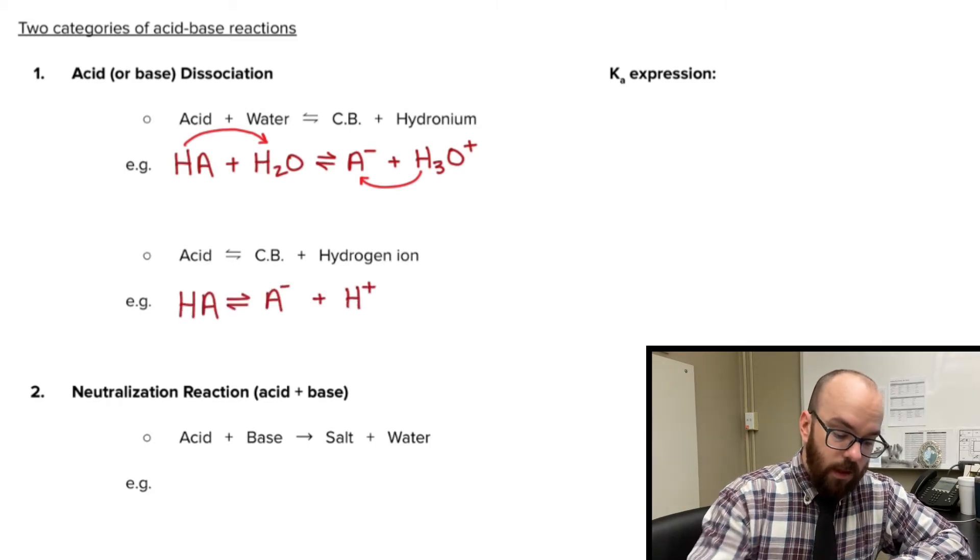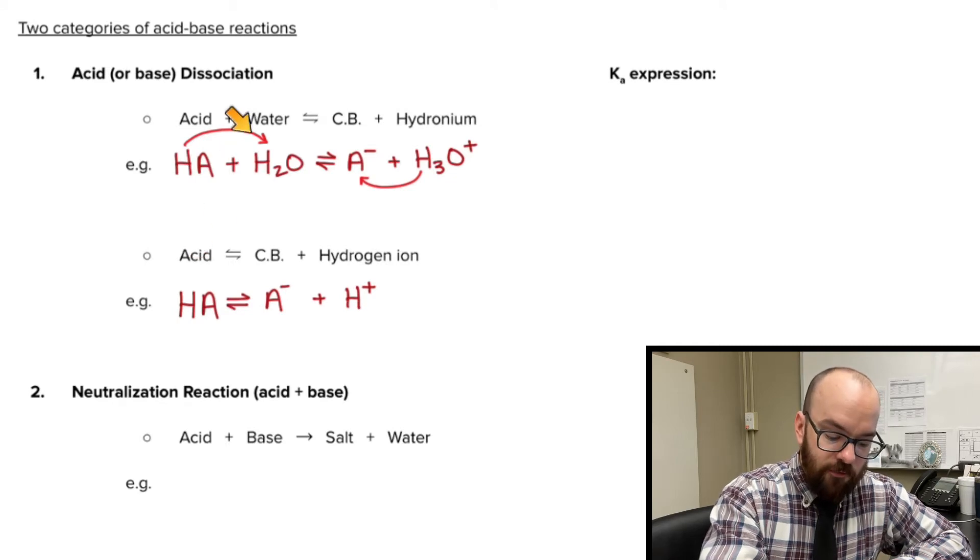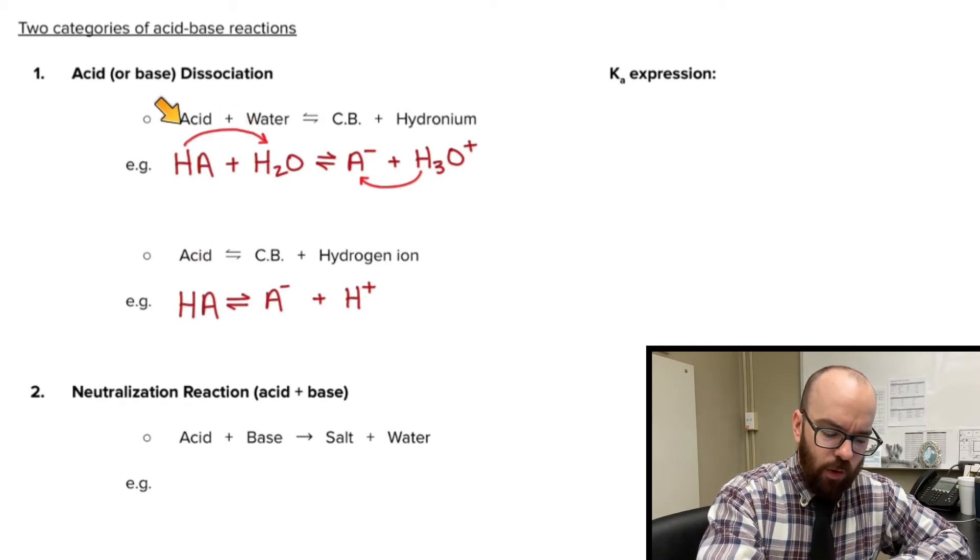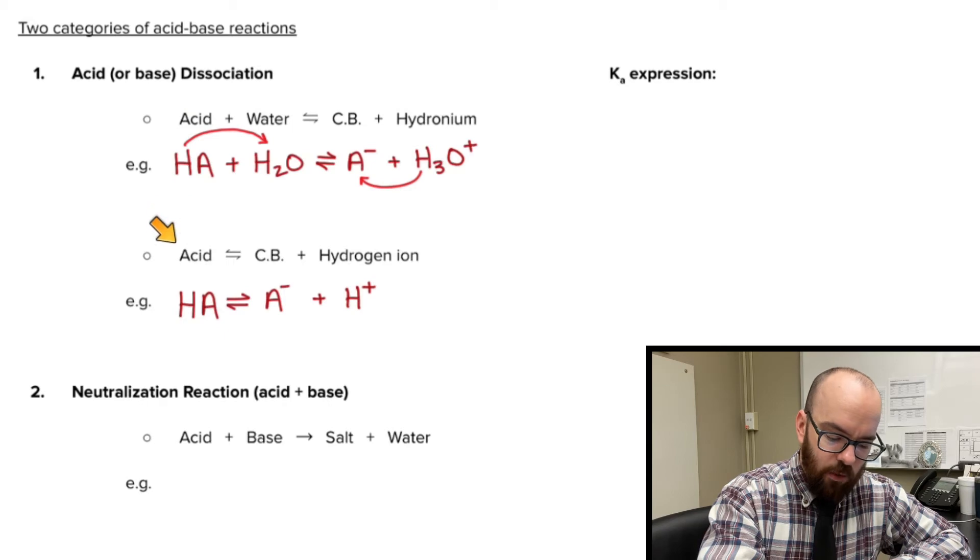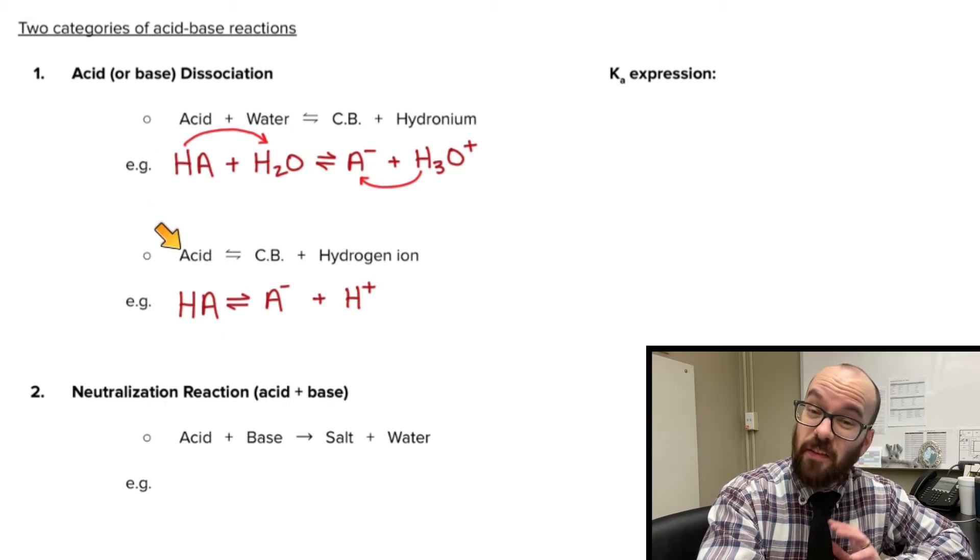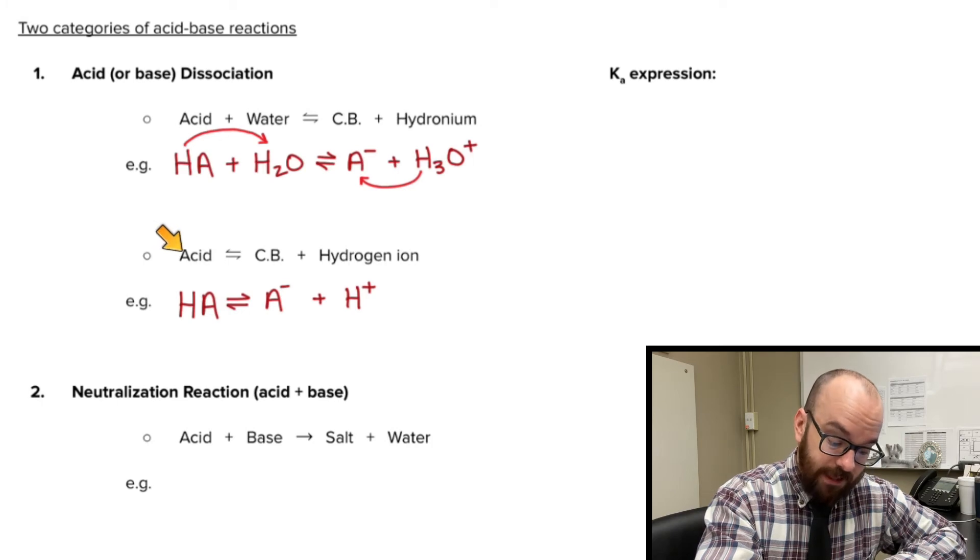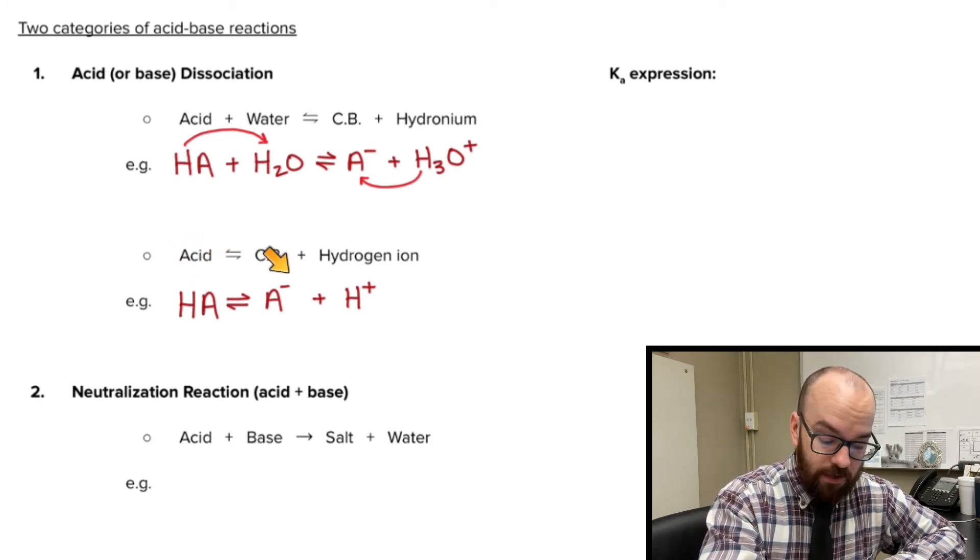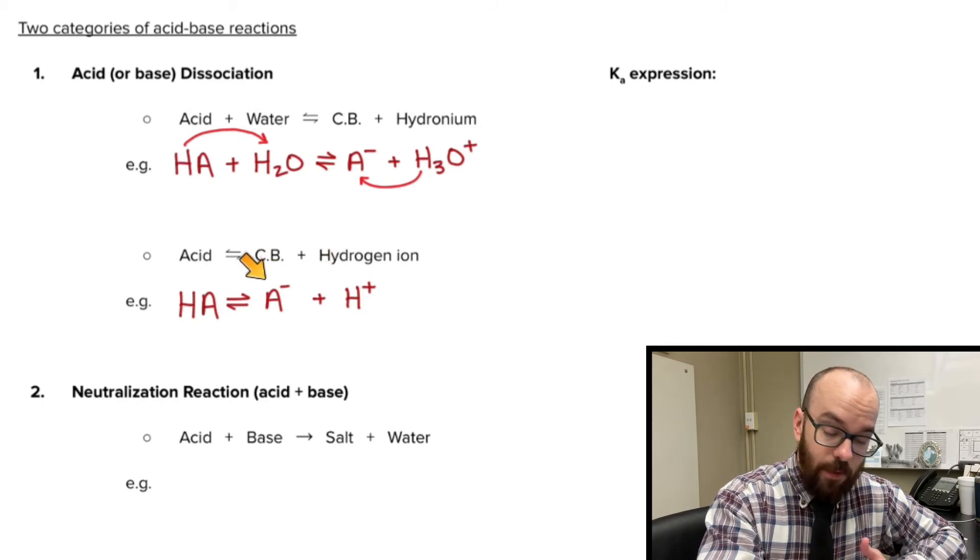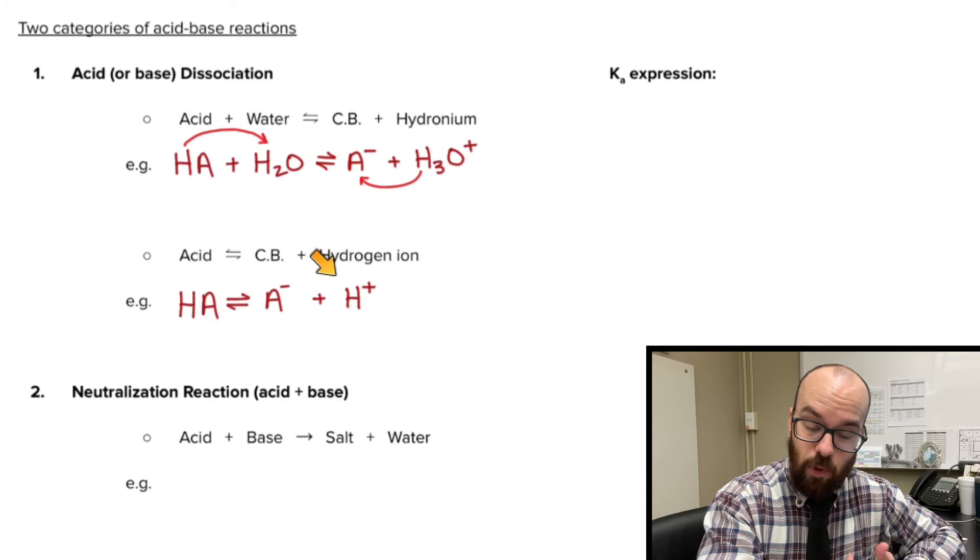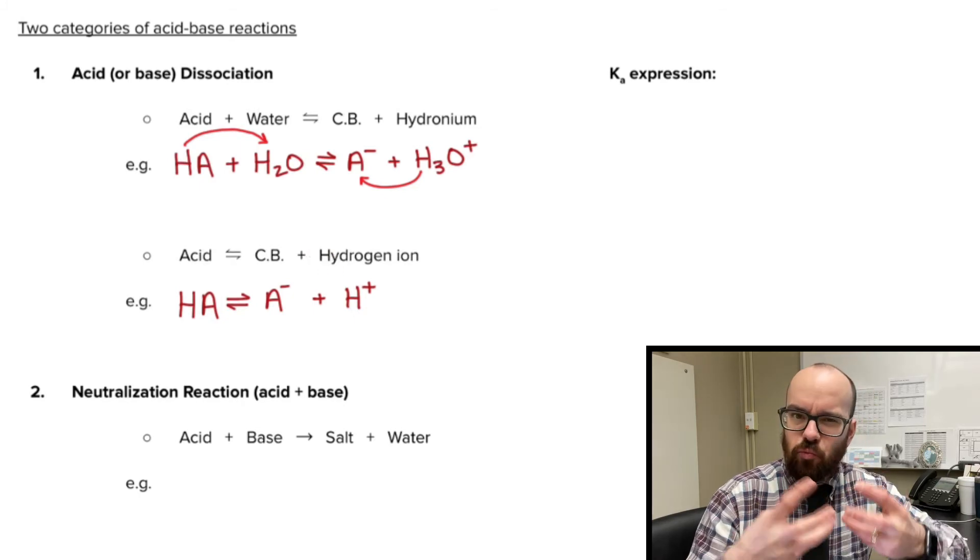But there's a simpler way to write this, and a more common way to write this, which is the second example down here. Notice it's almost the same thing, except we don't have water. So this is the one with water up here, and this is the one without water down here. But it's really the same reaction, just described a little bit differently. In this case, we have the acid, just HA, and all we're writing is it dissociating into A- and H+. A- is still the conjugate base, and instead of a hydronium, H3O+, we're writing an H+.